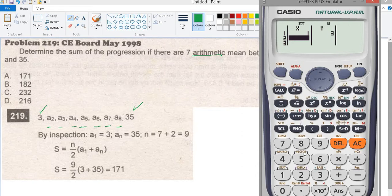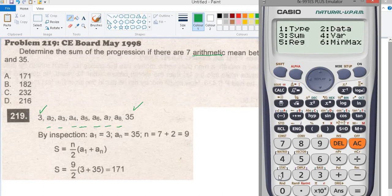Then the ninth term is 9, and the value is 35. Equals. Then press AC, then shift, 1 start, number 5 regression. The common difference is number 2, so letter b.